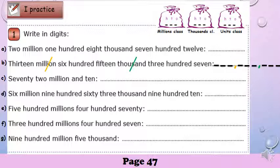Each class has three digits. So three here, comma, three in the thousands, comma, and three in the millions.